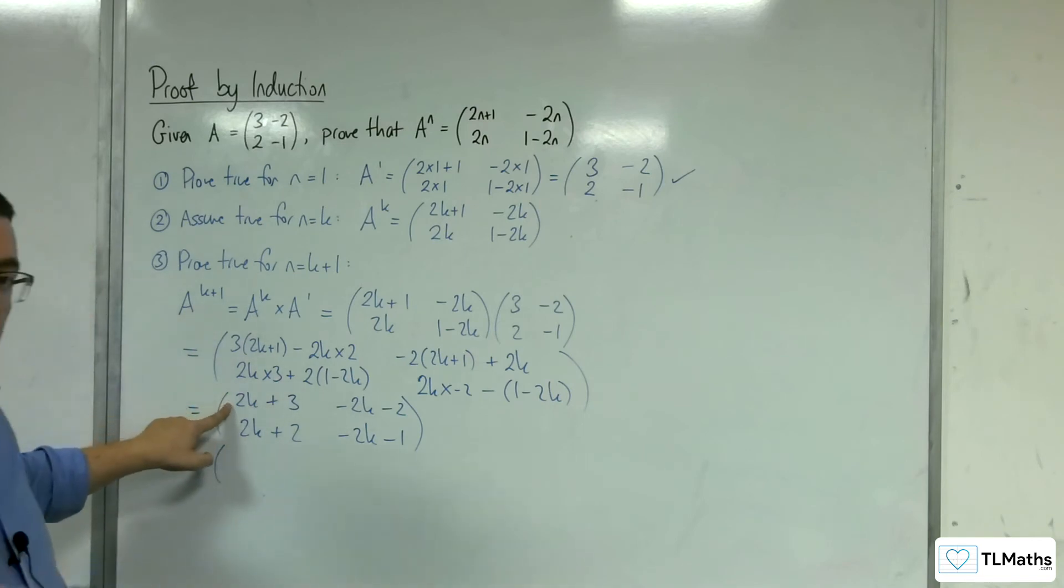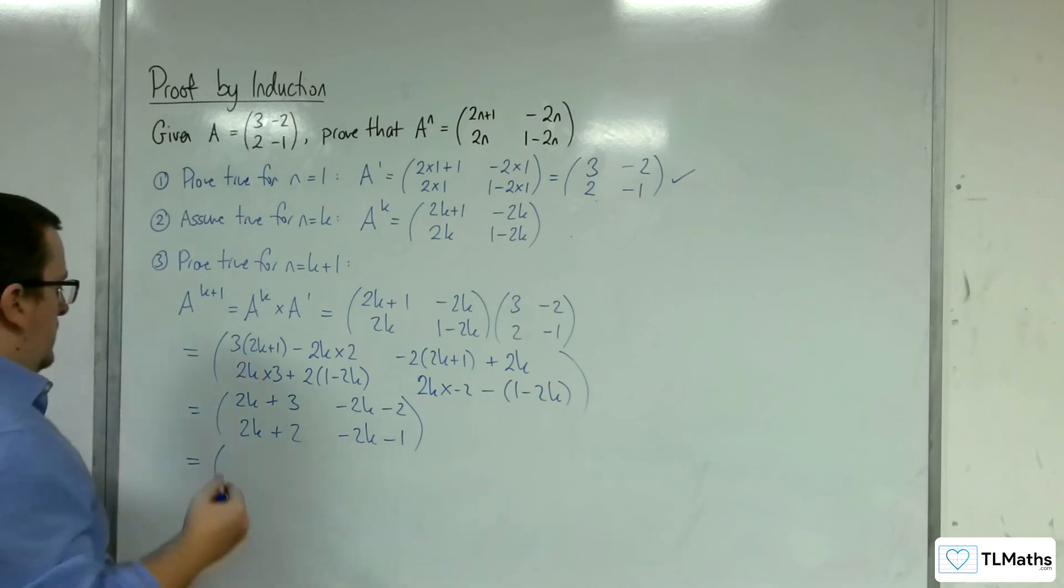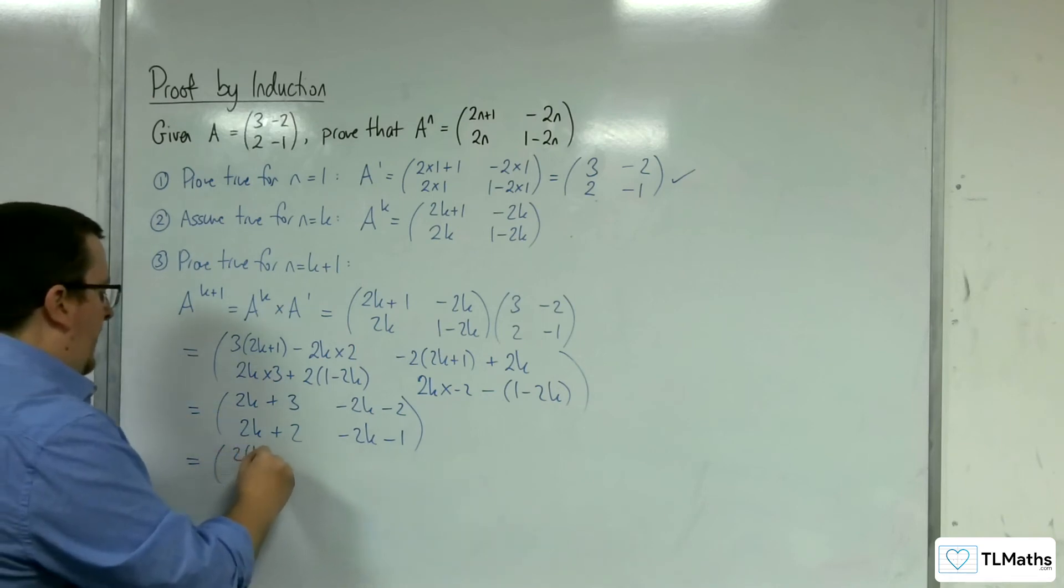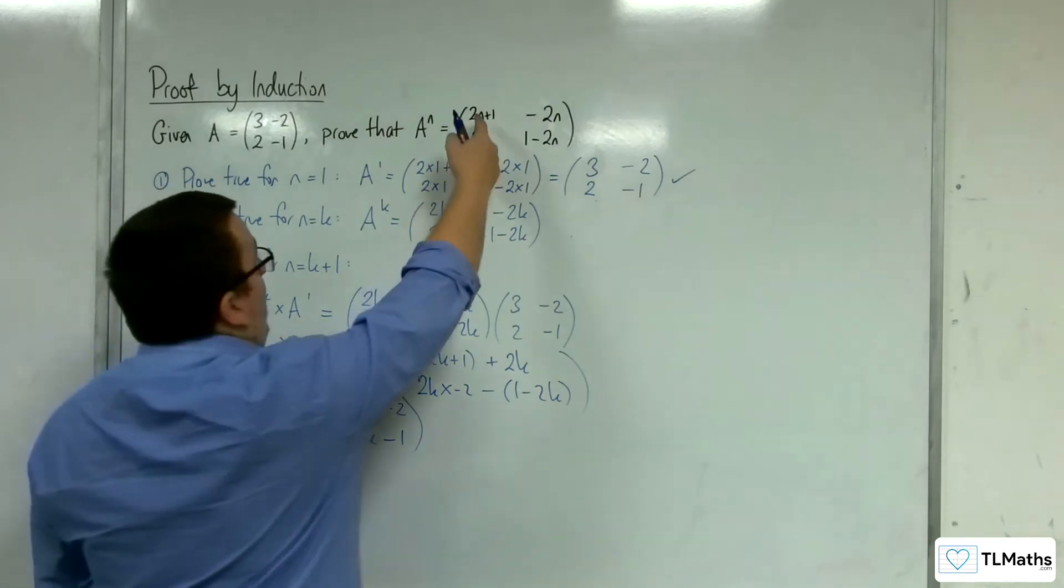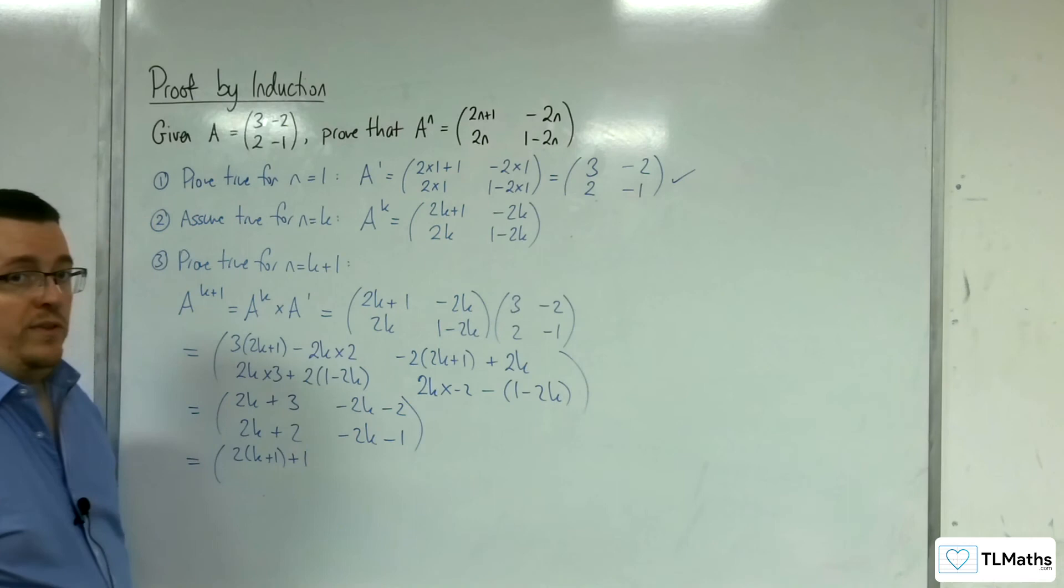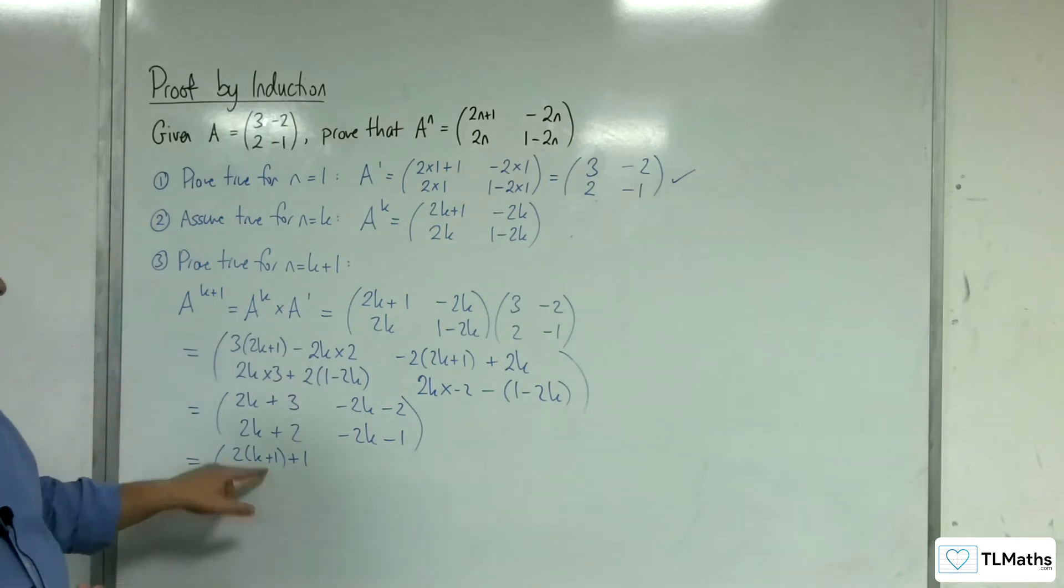So 2k+3 is 2 lots of k+1, plus 1. I know what I need to get, because I need to replace the n here with k+1, so I know I need to get to that, and that is the same thing. So multiplying that out would get me this term here.